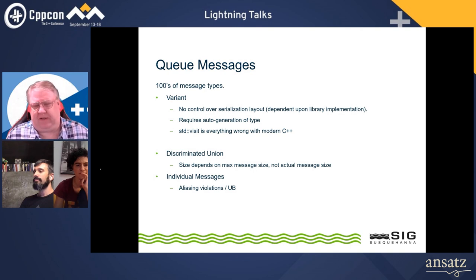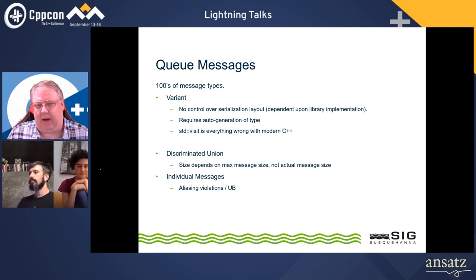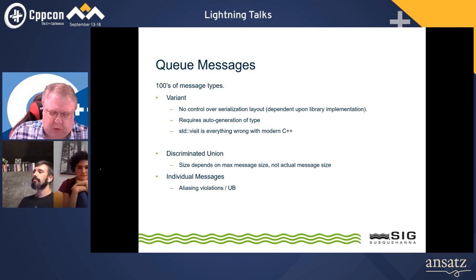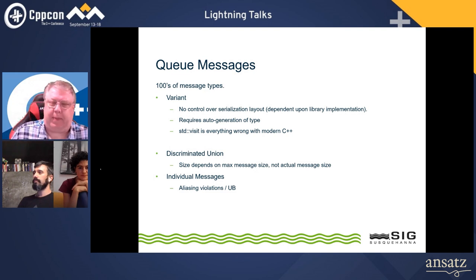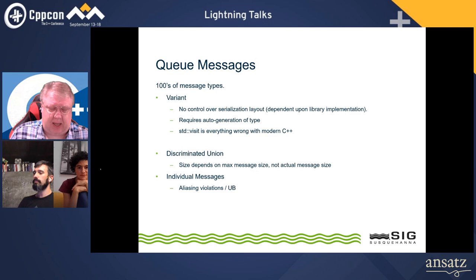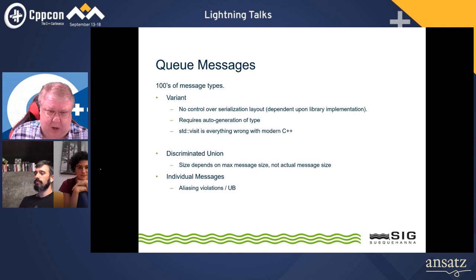So how do we represent those messages? Well, since C++17 we've had a vocabulary type, std::variant. The problem with std::variant is that we don't have control as a user over the serialization layout on the wire. So if we send a message from an ARM box running Linux to a Windows box on IA32, we're probably not going to be happy. Also, there's an awful lot of boilerplate code involved in std::variant, meaning we have to auto-generate huge files, and when your file reaches over a million lines of code, just the compile time alone is staggering. And std::visit is just everything that's wrong with modern C++.